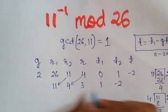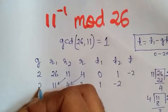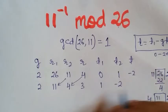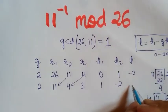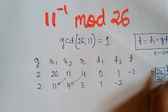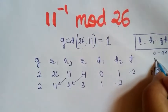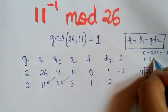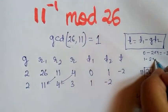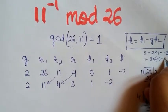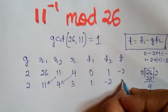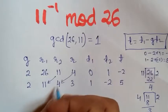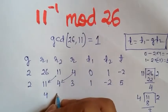Again we divide 11 by 4, which gives quotient 2 with remainder 3. We find T using the formula: T1 is 1, minus G which is 2, times T2 which is minus 2, giving 1 plus 4 equals 5. So T value is 5.